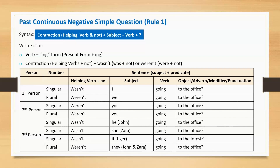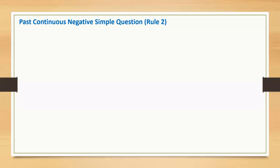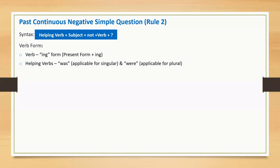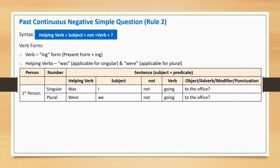I will explain another way of making past continuous negative simple question. Rule 2: the sentence begins with a helping verb, followed by subject, the word 'not', main verb, and question mark. The main verb is in the -ing form. Helping verb 'was' is applicable for singular and 'were' is applicable for plural.